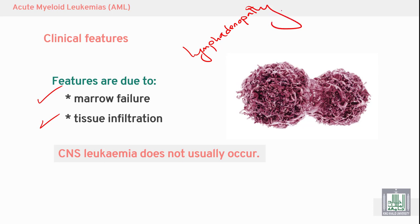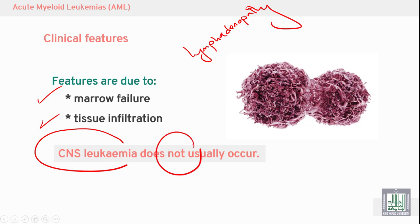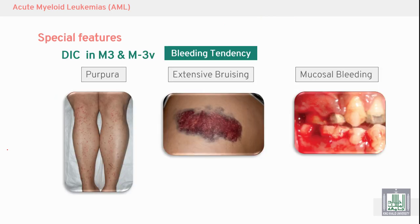Lymphadenopathy involves enlargement of the lymph nodes. CNS leukemia does not usually occur in AML — this is very important. In acute lymphoblastic leukemia, CNS leukemia is common. A special type of AML is M3.